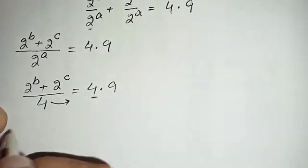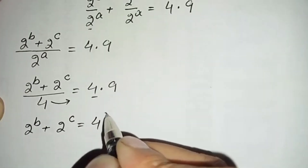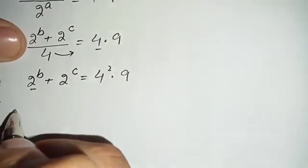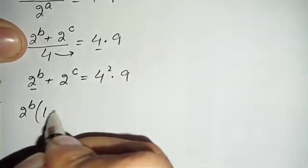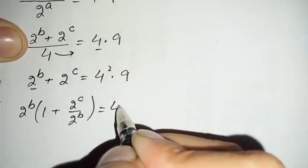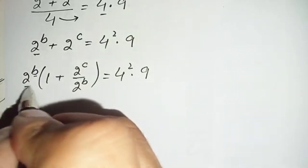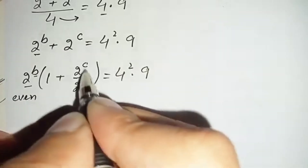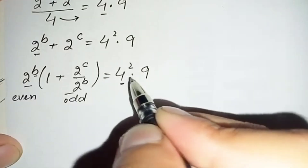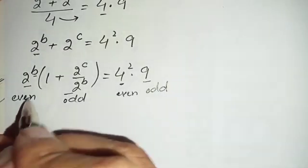Moving 4 to the right hand side by multiplying, the equation becomes 2 raised to power b plus 2 raised to power c equals 4 times 4 times 9, which is 4 squared times 9. From the left hand side we take 2 raised to power b as common, giving 2 raised to power b times 1 plus 2 raised to power c divided by 2 raised to power b equals 4 squared times 9. Again 2 raised to power b is even and 4 squared is even, while 9 is odd.